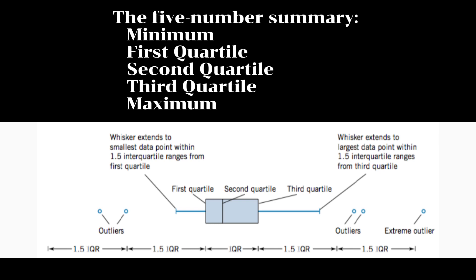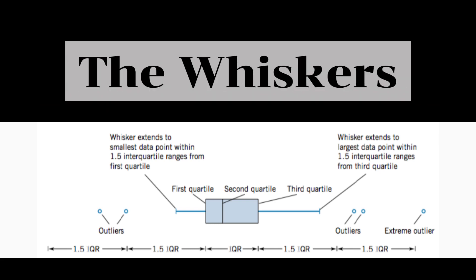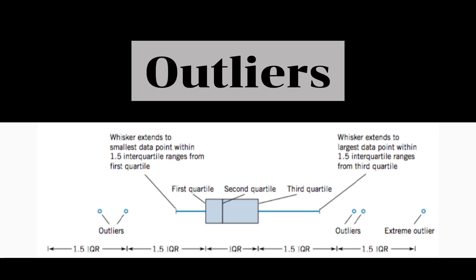Components of the box and whisker plot include the box, the median line, the whiskers, and the outliers.